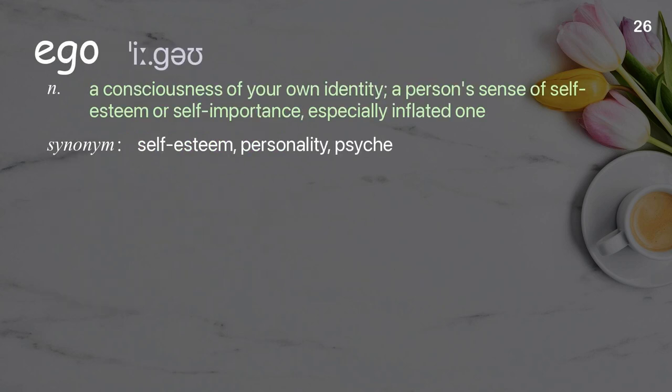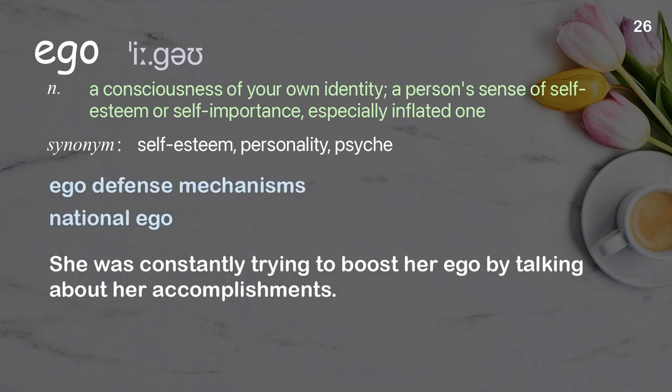Ego. A consciousness of your own identity; a person's sense of self-esteem or self-importance, especially an inflated one. Examples: ego defense mechanisms, national ego. She was constantly trying to boost her ego by talking about her accomplishments.